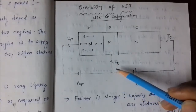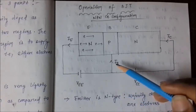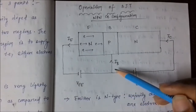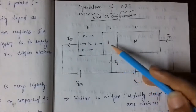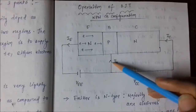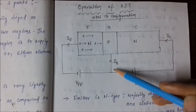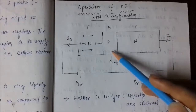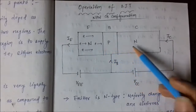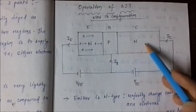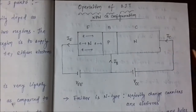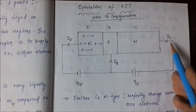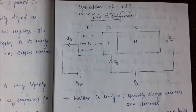This electron-hole recombination causes a base current to flow. The direction of electric current is the same as the direction of flow of holes. The remaining 95% of electrons from the base move towards the collector. As the electrons move in that direction, the collector current flows in the opposite direction. This is the mechanism of current flow.